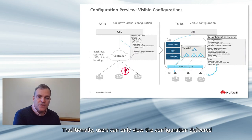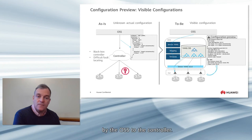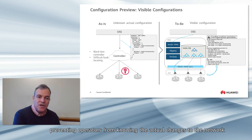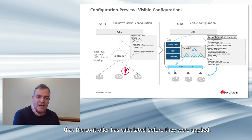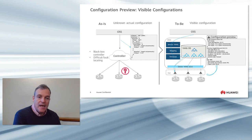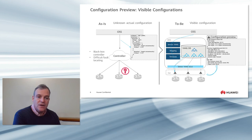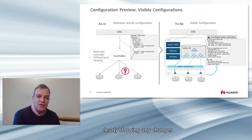Traditionally, users can only view the configuration delivered by the OSS to the controller. The configuration change delivered by the controller to the devices is not visible, preventing operators from knowing the actual changes to the network that the controller has calculated before they are applied. AOC provides the operator the capability to preview any changes to devices before they are sent to the network, clearly showing any changes to the current configuration that will be acquired.